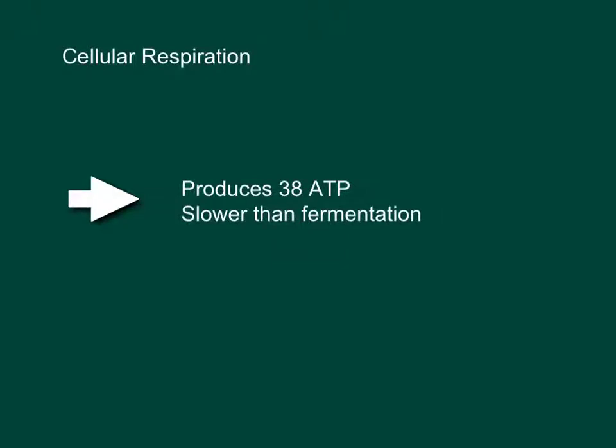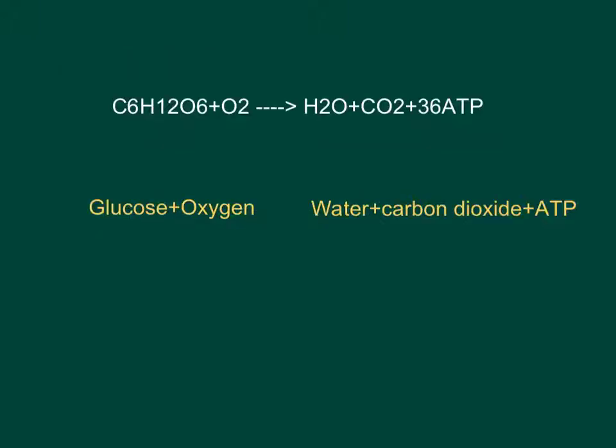The difference between cellular respiration and fermentation is that cellular respiration produces 38 ATP and fermentation only produces 2. ATP production is slower in cellular respiration than fermentation as well.